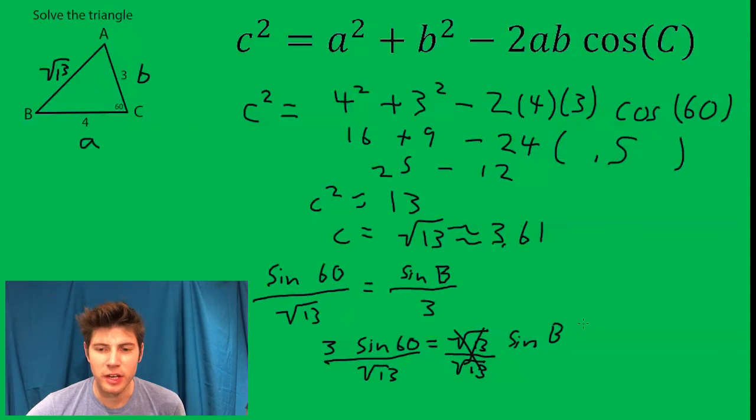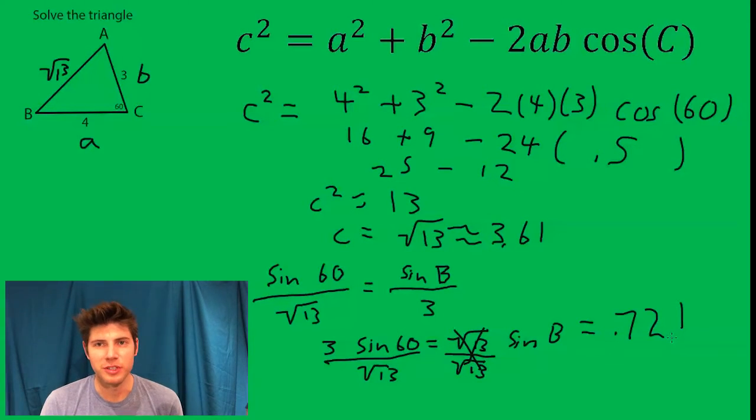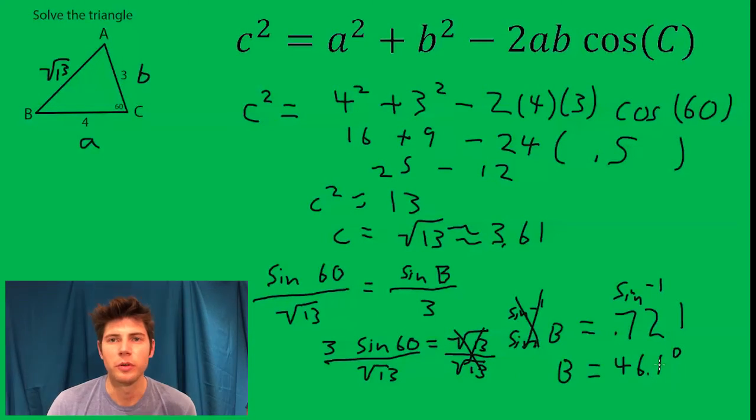So then we end up with sine B equals 0.721. And then we'll sine inverse both sides. And B equals 46.1 degrees.